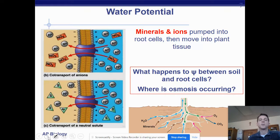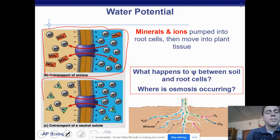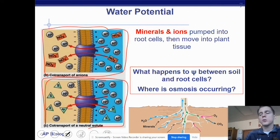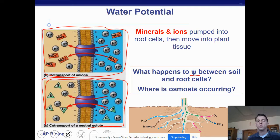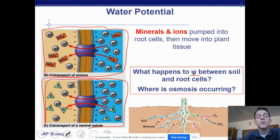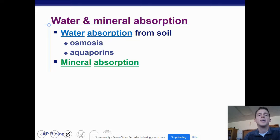Minerals and ions pumped into the root cells then move into the plant tissues — we see symporters bringing in nitrates and co-transporters bringing in other solutes (not always ions). Pumping minerals into the root is active transport. What happens to water potential between the soil and root cells? The water potential in the soil must be high and the water potential in the root must be lower, because water potential always moves from high to low. That makes sense since there's more solute in the root. Water then moves via osmosis into the root.